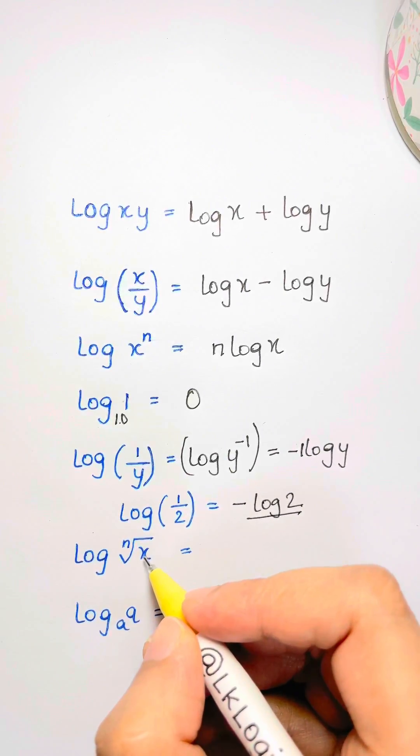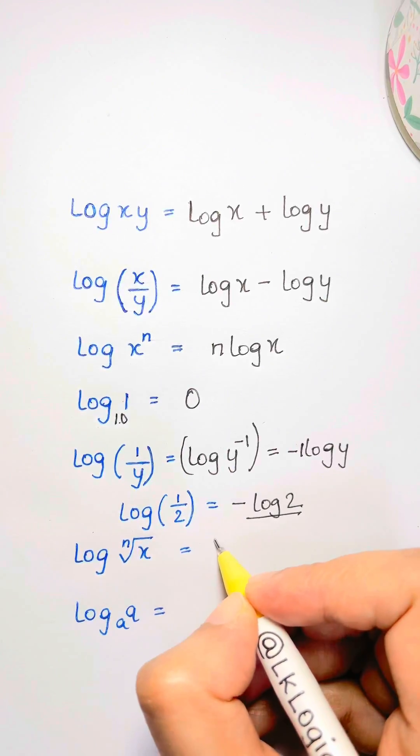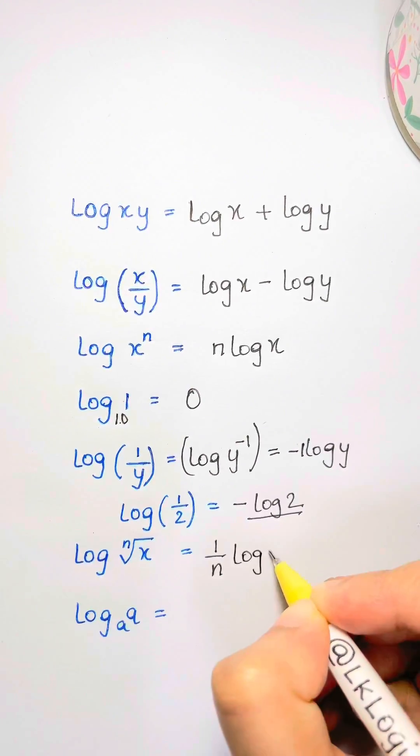And here, we have nth root of x. It means x to the power of one over n. So one over n comes down. You can even say log of x over n.